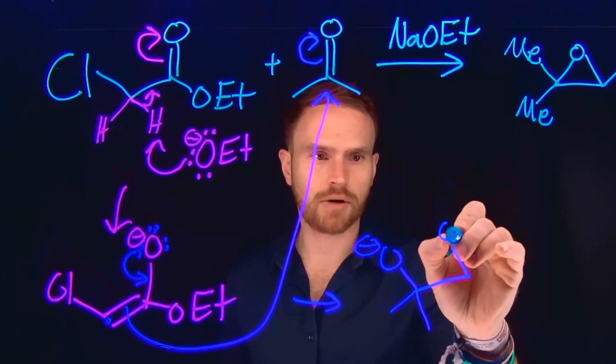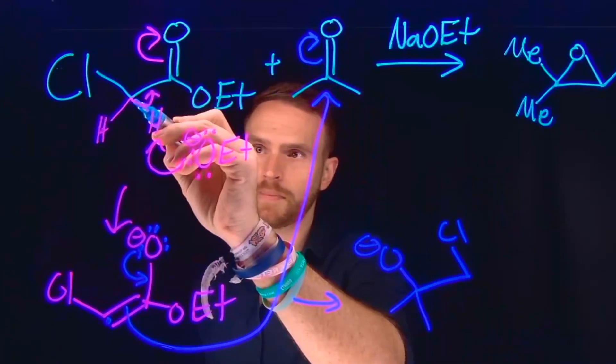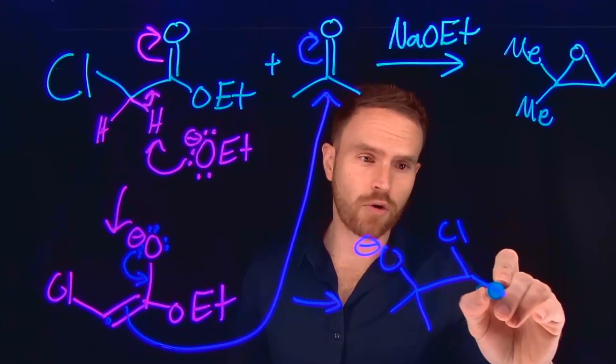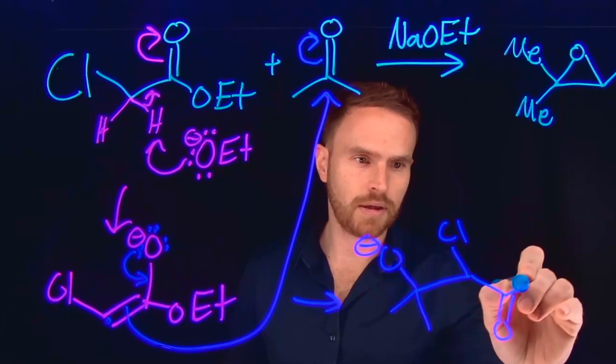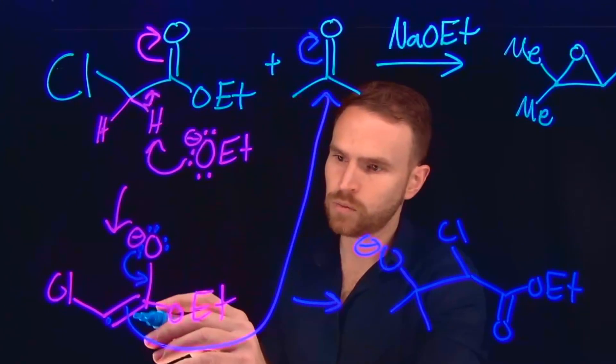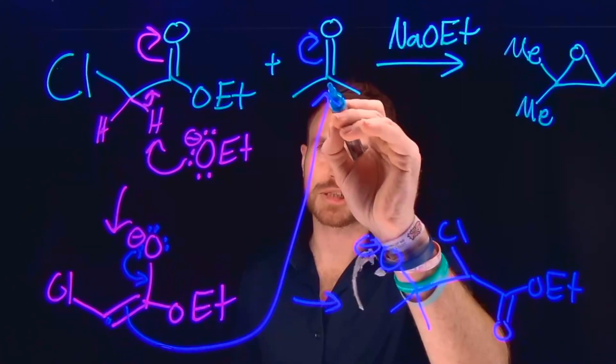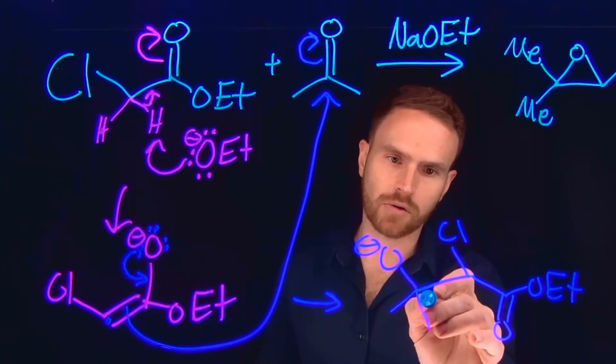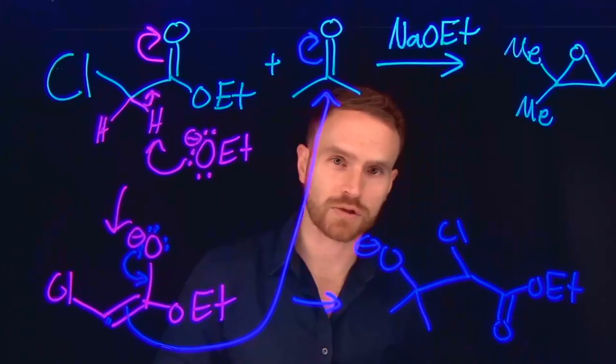So then we still have our chloro group, because that's where the attachment was at this nucleophilic carbon position. And then we have reformed our ester in the previous step. So we reformed our ester here, we generated a nucleophilic carbon which attacked this electrophilic carbonyl carbon, and this is where that acetone was added and the new carbon-carbon bond was formed.